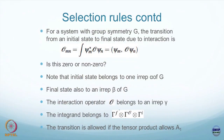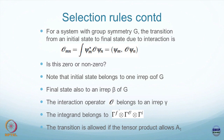For a system with group symmetry G, summarizing what was just said: the transition from an initial state to a final state due to interaction is given by some operator O. There is an initial state n and a final state m, and the question is whether this matrix element is going to be zero or non-zero.